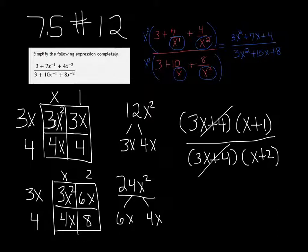So the 3x plus 4s will divide out, and you're left with just x plus 1 over x plus 2.